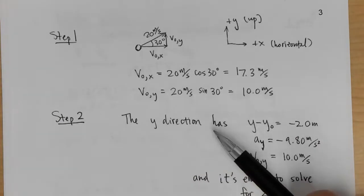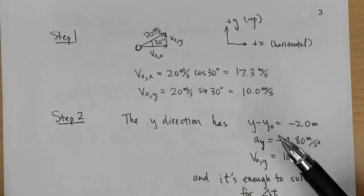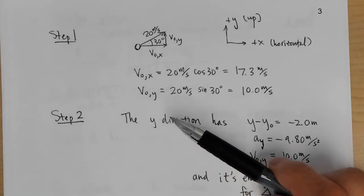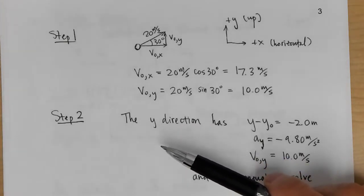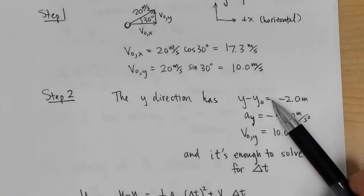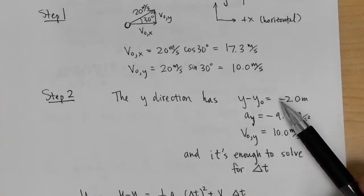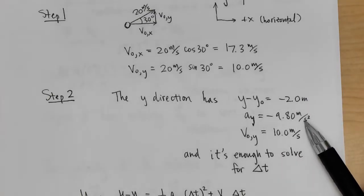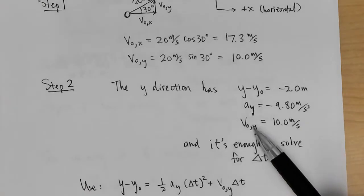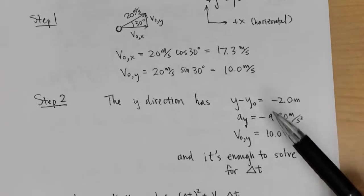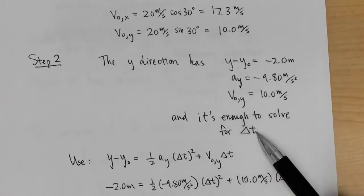Because the clock stops when it hits the ground, Δt will be determined by the y motion. In the y direction: y − y₀ = −2.0 m (it drops 2 meters), ay = −9.8 m/s², and v₀y = 10 m/s. This is enough information to solve for Δt.